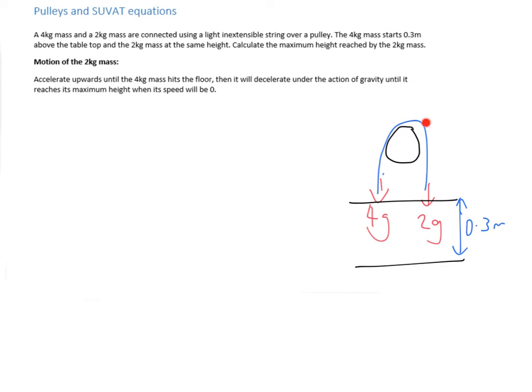Then the 2kg is not going to get any force from this anymore. The only force acting on it then would be gravity, which would then cause it to slow down and stop. It would reach some sort of maximum height here, which we can calculate. That's the procedure we're going to be going over here.